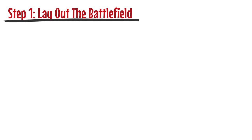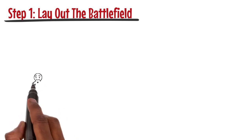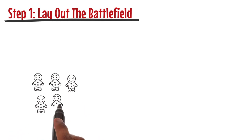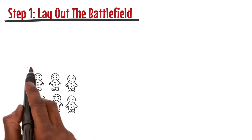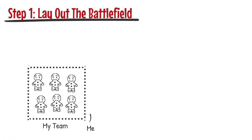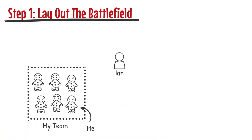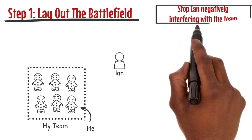The first step with battle mapping is to lay out the battlefield. This involves identifying who all the stakeholders are. To use an example, let's say I've got a manager in the organisation who's interfering with the work of me and my development team. We'll call this manager Ian. My goal is to stop Ian negatively interfering with me and the team.